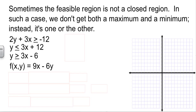Now, sometimes, your feasible region doesn't close up. And in that case, we can't get both a max and a min. We get one or the other. So, we have three inequalities to graph. 2y plus 3x is greater than or equal to negative 12, y is less than or equal to 3x plus 12, and y is greater than or equal to 3x minus 6. I know how to graph these, but I'm going to have to use different strategies for the first one. I need to find the intercepts.